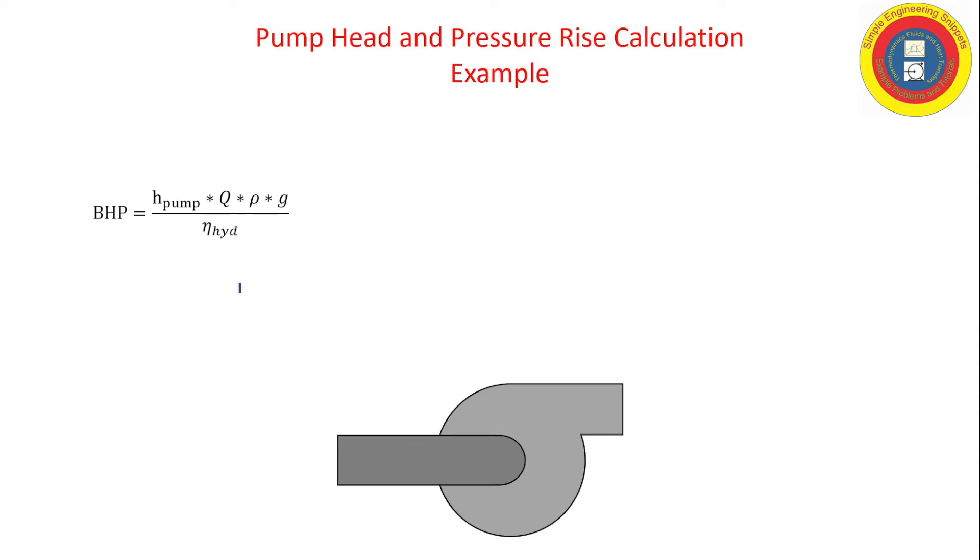Okay, so one of the things that we're provided is the brake horsepower. Here's the equation for brake horsepower. In the numerator, this is the amount of energy or power that is actually provided to the fluid. The pump is not perfect, and so we divide through by the efficiency to obtain the brake horsepower. The brake horsepower is the power going to the shaft of the pump, that power is provided by typically a motor, maybe a turbine.